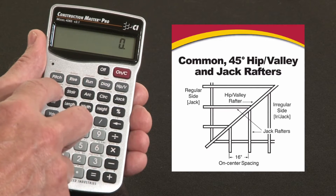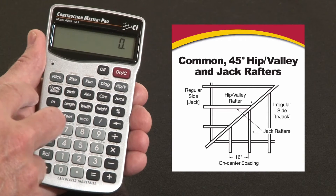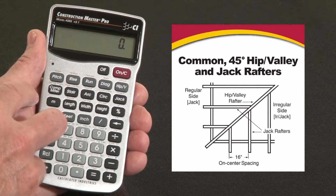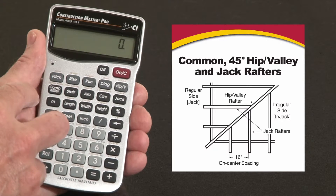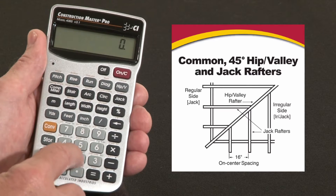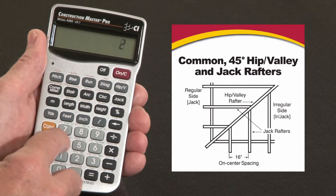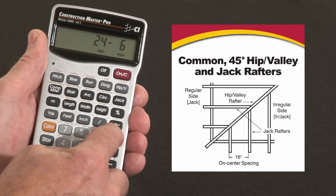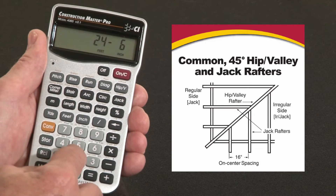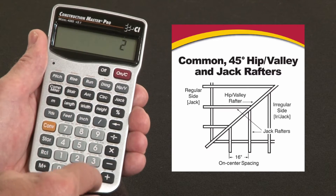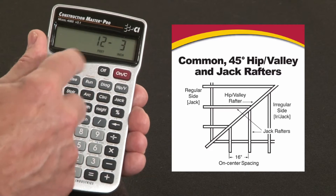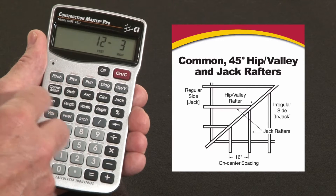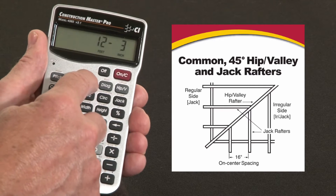As long as you have any two of these values, you can solve for the rest. In this case, let's say our building has a 24 foot 6 inch span. So we'll enter that — 24 feet, 6 inches — and divide that by 2. That gives us our run: 12 foot 3 inches. I'll enter that as run.